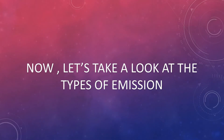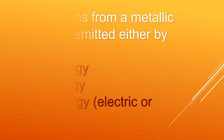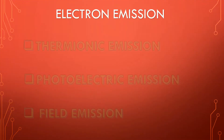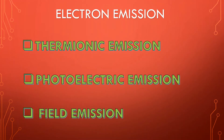Now let's take a look at the types of emission. Free electrons from a metal surface are emitted either by heat energy, light energy, or field energy. Thermionic emission is the emission when heat energy is supplied to materials for the emission of electrons. Photoelectric emission is the emission of electrons when light energy is supplied to it. Field emission is the emission of free electrons from a material when electric or magnetic energy is given to it.